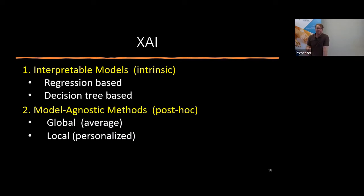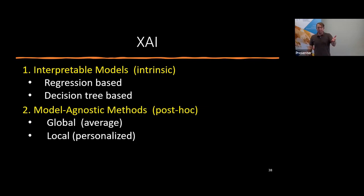There are two main types of explainability methods. First, interpretable models — intrinsic methods: in the model itself you can explain the output. Regression allows you to use the coefficients to see which features are prominent in predicting the output. Decision tree-based methods allow you to use feature importances. Second, model-agnostic methods — post hoc: you train a complicated model on the data to get excellent predictions, and then you perturb the input space in various ways without further training. There are global (average) and local (personalized) versions.